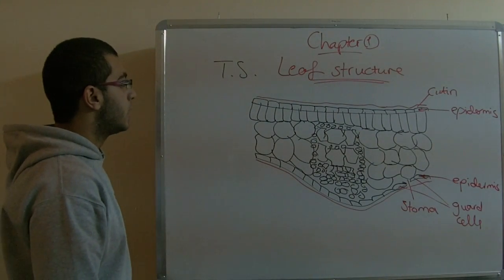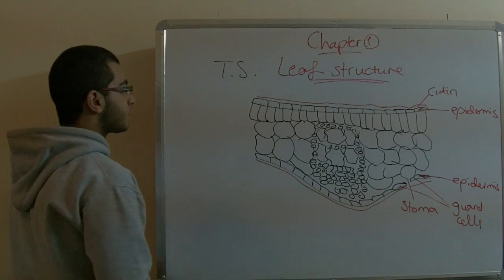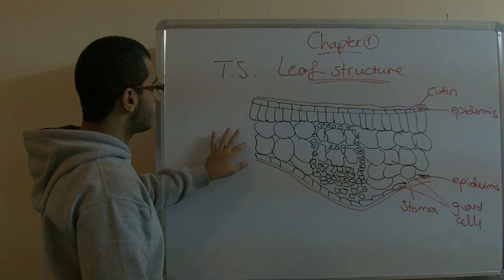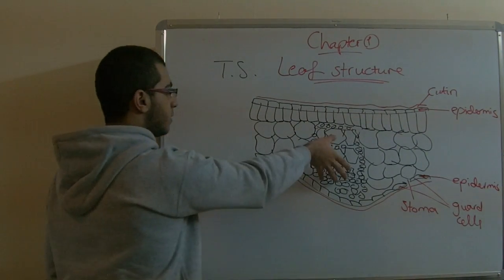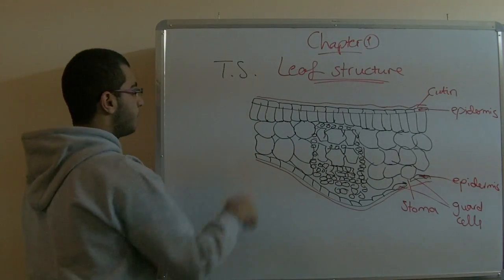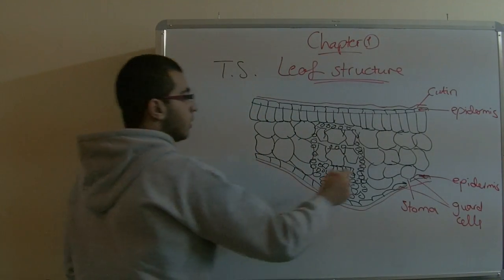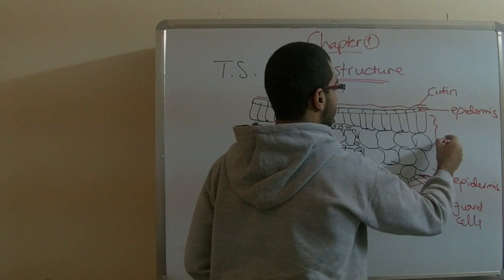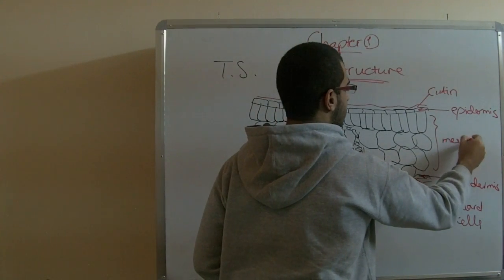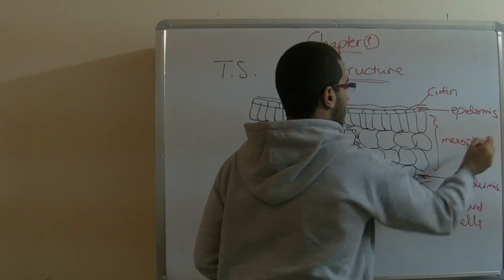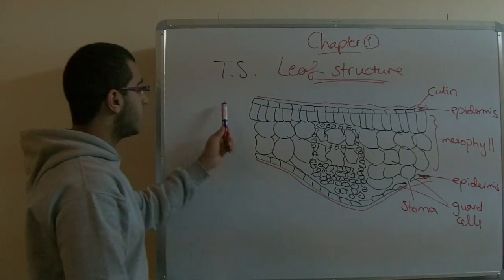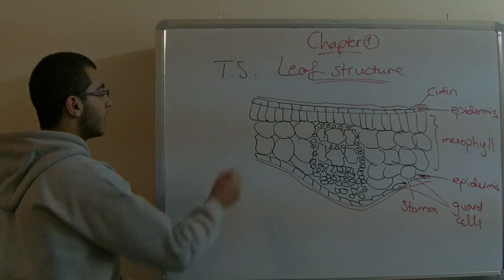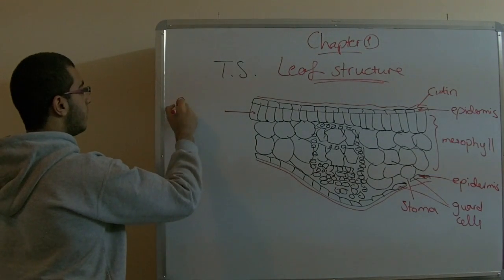The second point is this area of the leaf, without the center part, these two layers. This is called the mesophyll. The mesophyll is divided into two layers. This layer is called the palisade layer.